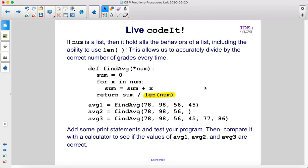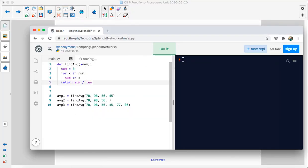If num is a list, then it holds all the behaviors of a list, including the ability to use len or length. This allows us to accurately divide by the correct number of grades every time. So len num. So the length of the list. That still doesn't have any print statements. So we can't run it yet.